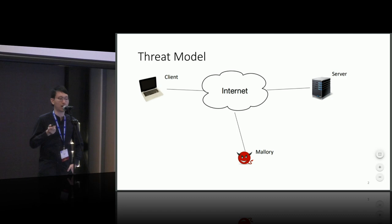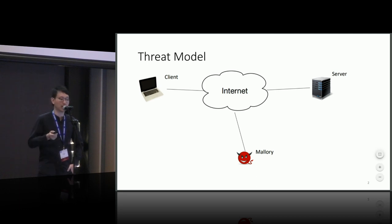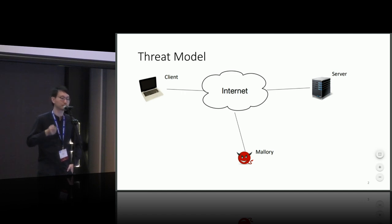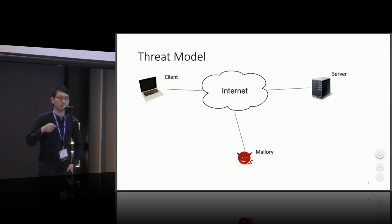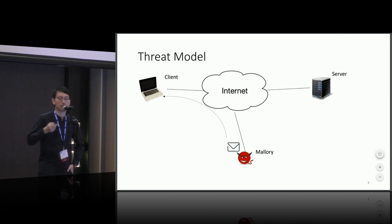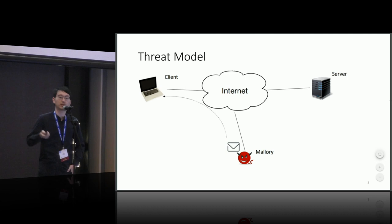What is the off-path TCP injection attack? Here's the threat model we used in our work — for now, the router is not involved, but I will get into that later. Given two hosts — one client and one target server — Mallory is able to inject spoofed data into the victim connection. The attack begins when Mallory lures the victim into visiting a malicious website, for example via phishing email.